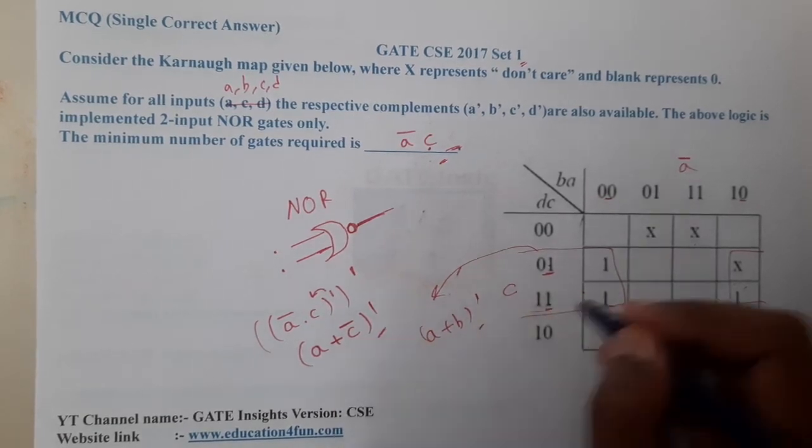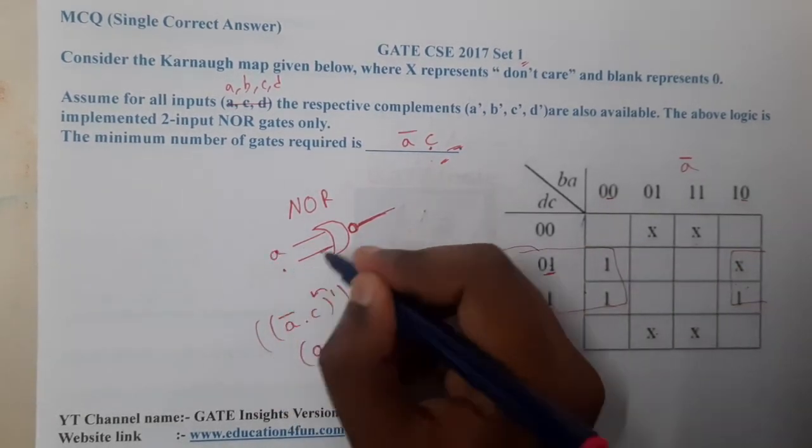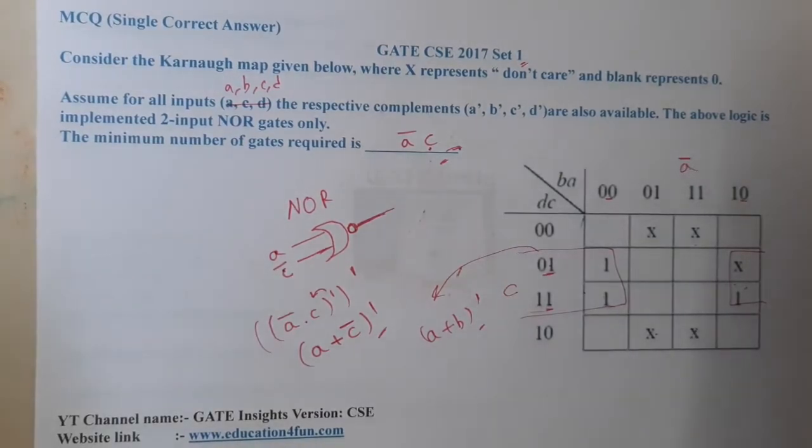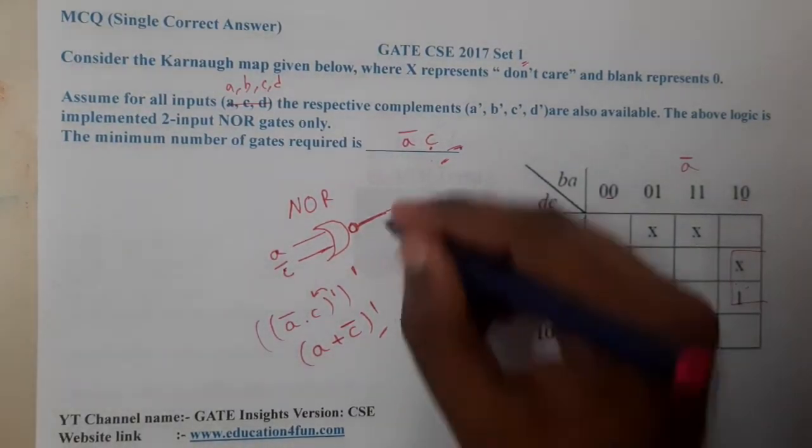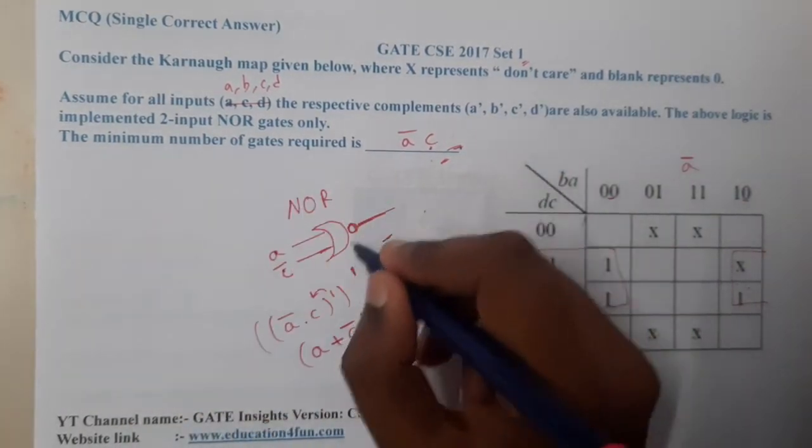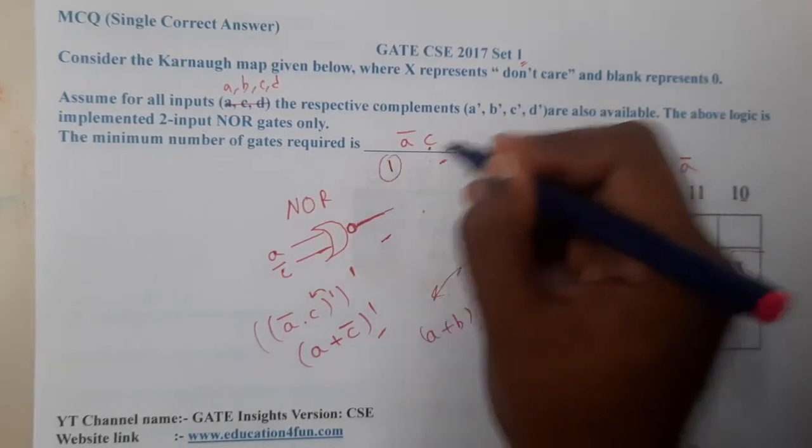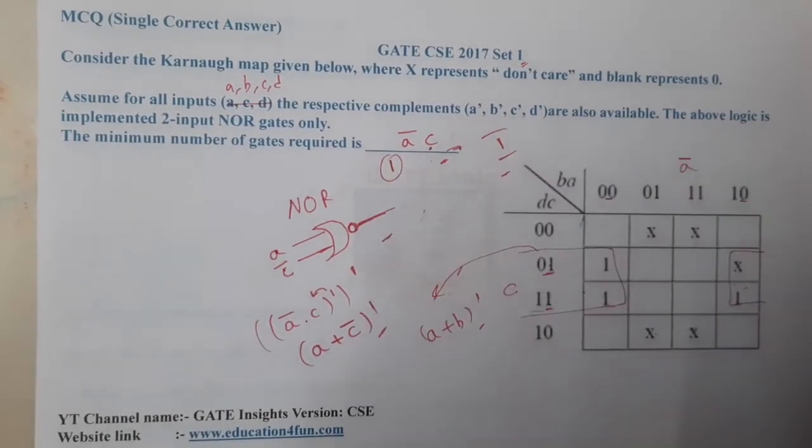complement. So now it is exactly looking like that. You can give one input as a and another input as c'. This is quite simple. How many gates are required? Only with a single gate we are able to solve it. So the final result